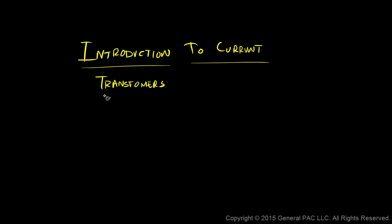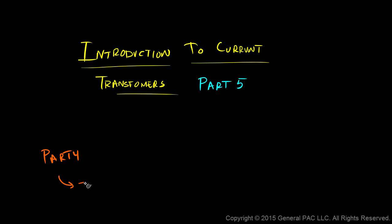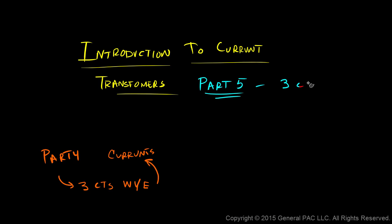Introduction to Current Transformers Part 5. In Part 4, we drew 3 CTs connected in Y and showed how the current would circulate. In Part 5, we're going to connect 3 CTs in Delta and show how the current would circulate for the Delta connection.